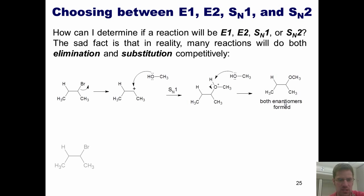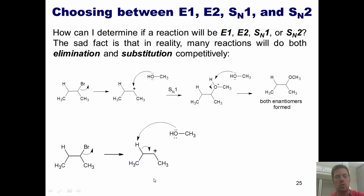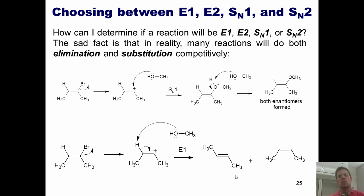I want you to contrast that with this: I could react the exact same molecule with the exact same base, methanol, and imagine the bromine leaving to give a secondary carbocation. Instead of methanol forming a bond with that positively charged carbon, it grabs the hydrogen next door and pumps those electrons down like a door on a hinge, giving alkene products. The trans alkene will be more favorable, of course, because it's more stable. This is an E1 reaction. So on paper, the weak base methanol could potentially do both of these reactions, and in reality, probably does.